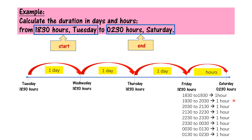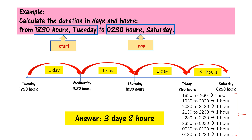All together, how many hours? Count: 1, 2, 3, 4, 5, 6, 7, 8 — so it's 8 hours. And finally, you combine the answer in days and hours. The answer is 3 days, 8 hours.